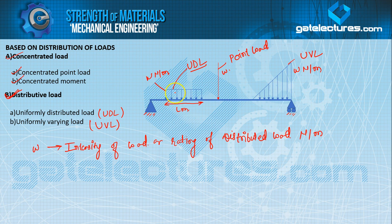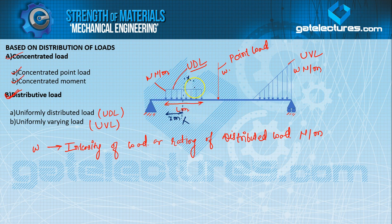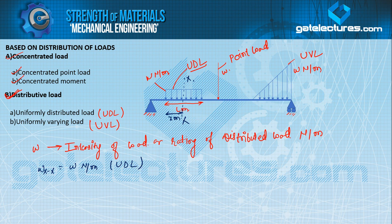At every point the intensity is W Newton per meter. To analyze this, we take an XX section — X meters from one end. On the left-hand side and right-hand side, when X equals 0 the intensity is W Newton per meter, and when X equals L the intensity is also W Newton per meter. So W at XX section equals W Newton per meter — intensity is constant at any section under UDL.